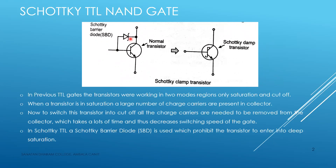Only 0.25V is needed to turn it on. The switching speed is high. Because of this high switching speed, we use Schottky TTL. Therefore, the overall gate speed is increased.